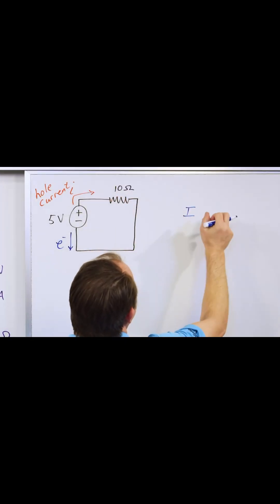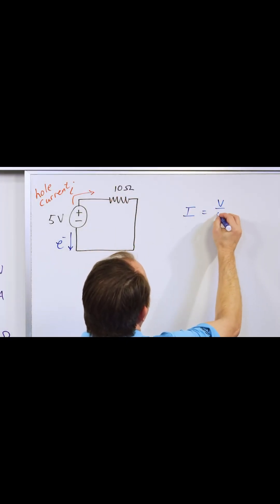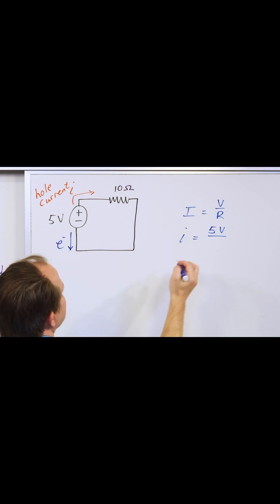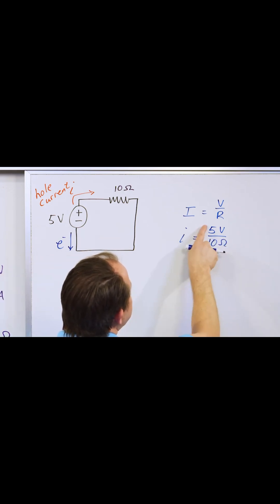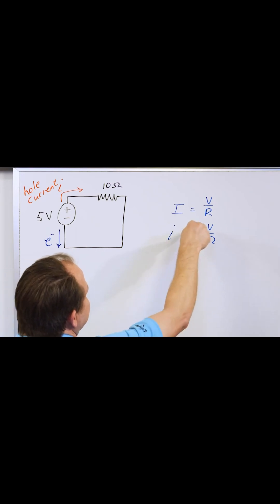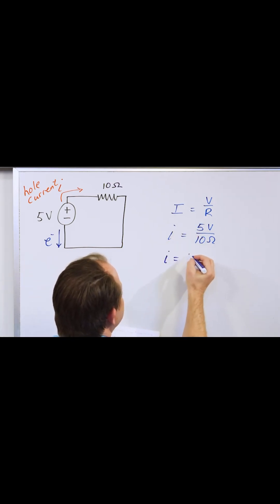The current flowing in this circuit is equal to V over R. But in this circuit, the voltage was five volts. So I'll put five volts there and the resistance was 10 ohms. Now I'm working in the base units of volts and ohms, so that's five over 10 which you all know is one half. And so the current flowing in the circuit should be one half or 0.5. What unit?